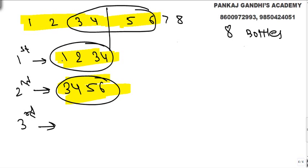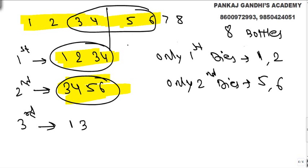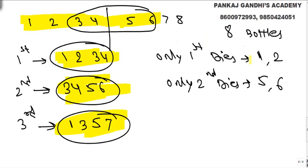So to summarize the eight-bottle case: the first rat gets mixture of bottles one, two, three, four; the second rat gets mixture of bottles three, four, five, six; and the third rat gets bottles one, three, and five. If only the first rat dies, one or two may contain poison. If only the second rat dies, five or six may contain poison. The third rat's result helps eliminate the remaining ambiguity.